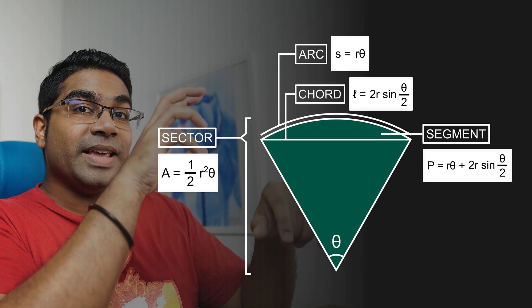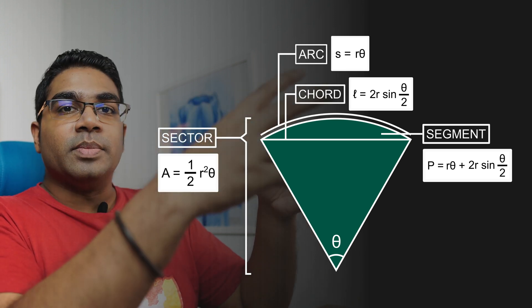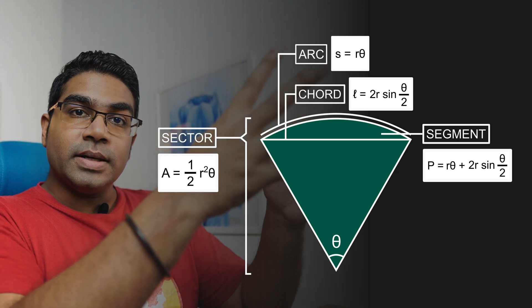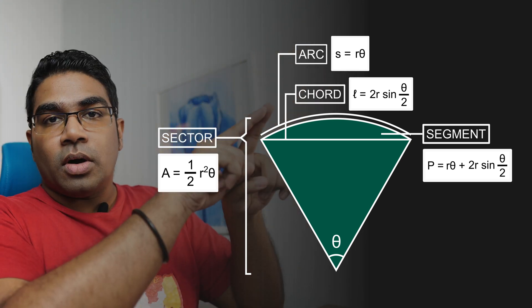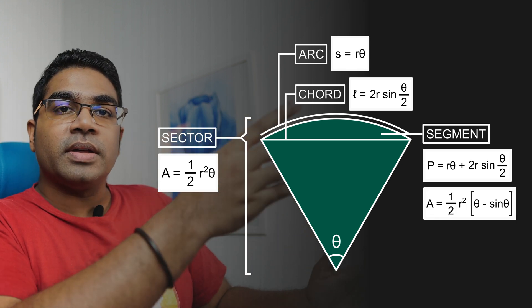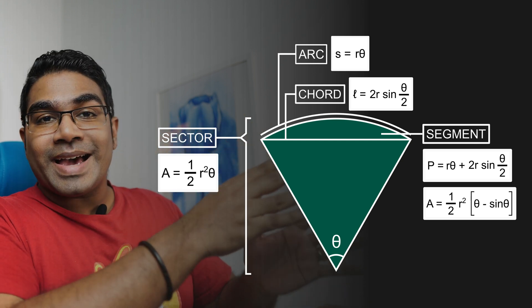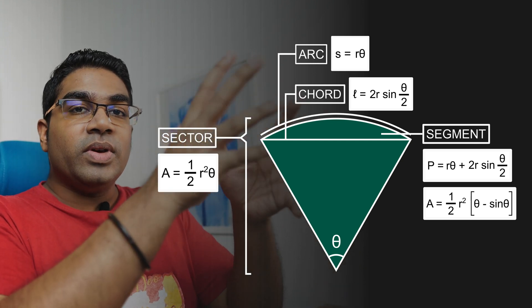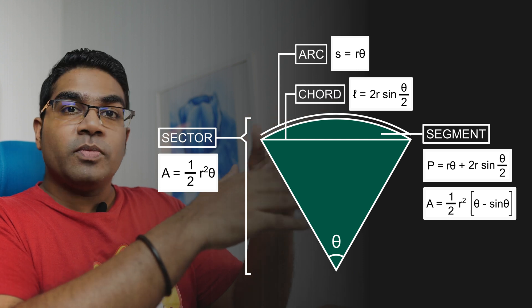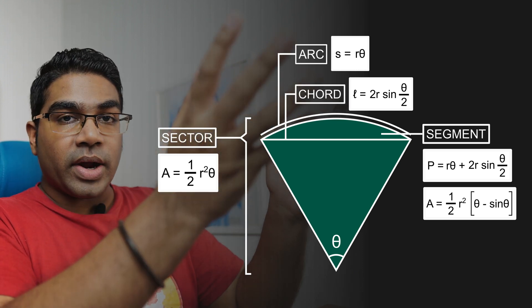The area of the segment, which is the area bound by the arc as well as the chord, is simply the area of the whole sector minus the area of the triangle. Therefore the area of segment is 1/2 r² θ - 1/2 r² sin θ. And if we factorize 1/2 r², we can simplify the formula to 1/2 r² (θ - sin θ).